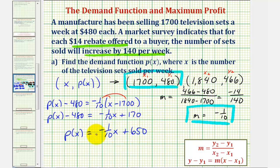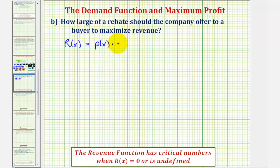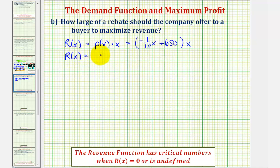Again, where X is the quantity sold and P of X is the price. For Part B, how large of a rebate should the company offer to maximize revenue? We begin by determining the revenue function. R of X equals the price times the quantity, or P of X times X. P of X is negative one-tenth X plus 650, times X. So the revenue function R of X equals negative one-tenth X squared plus 650X.